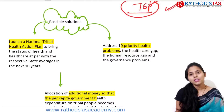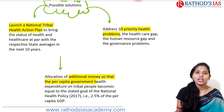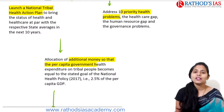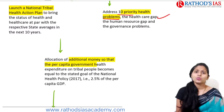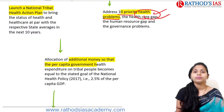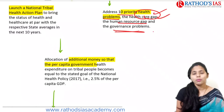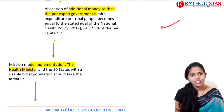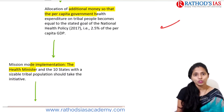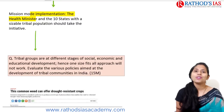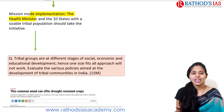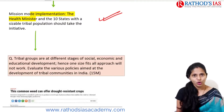Possible solutions include launching a National Tribal Health Action Plan to improve health status, increase primary healthcare centers, and improve doctor availability, addressing 10 priority health problems including healthcare gaps and human resource gaps. Resources should be properly allocated for implementing national health policy and increasing PHC availability. Mission mode implementation is also recommended, with health ministers in about 10 states with sizable tribal populations taking initiative.